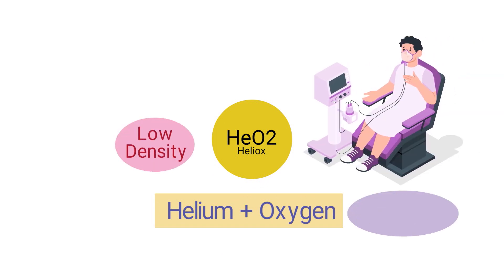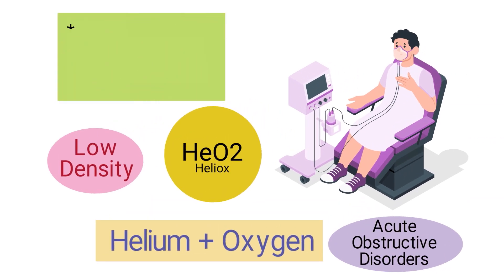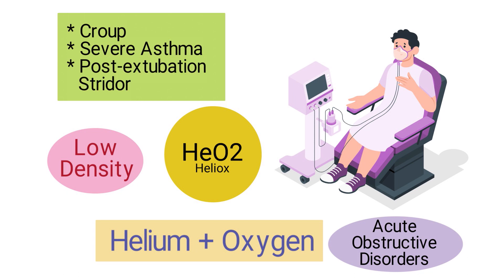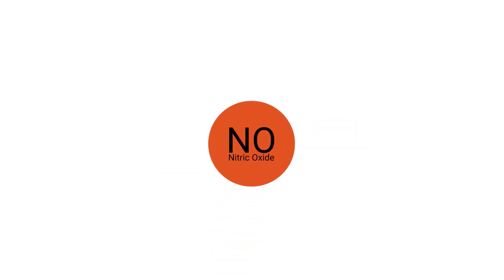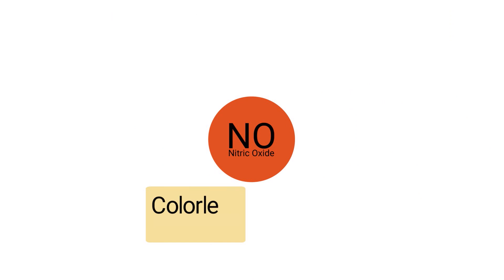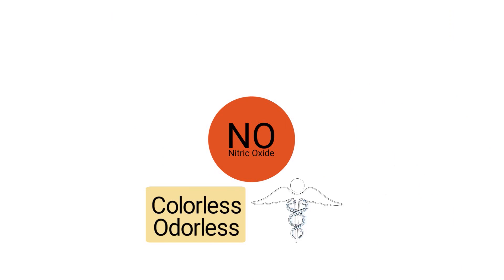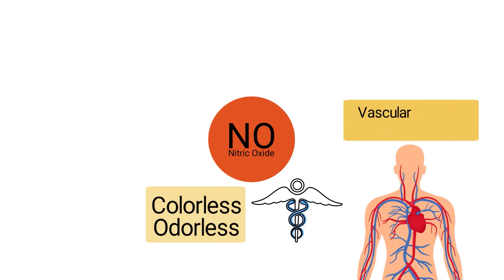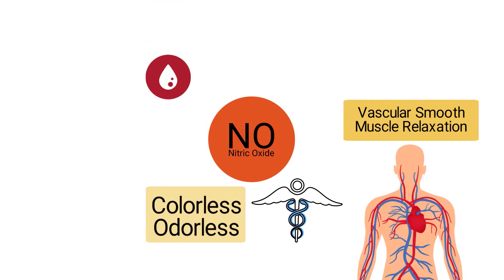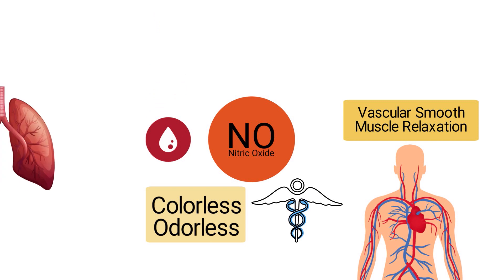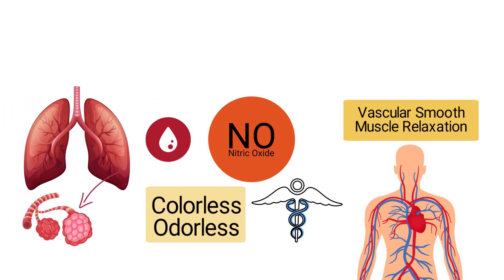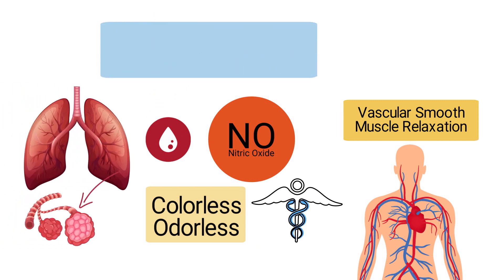Heliox is a mixture of helium and oxygen. This gas has a low density which is useful for treating acute obstructive disorders. It's also used to treat croup, severe asthma, and post-extubation stridor. Nitric oxide is a colorless, odorless medical gas that promotes vascular smooth muscle relaxation.